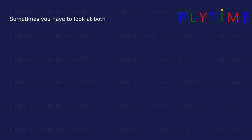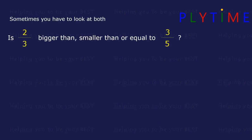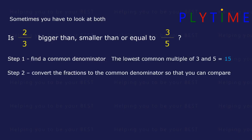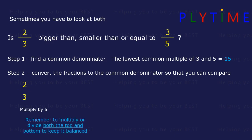Sometimes you have to look at both the top and the bottom. Is two thirds bigger than, smaller than, or equal to three fifths? We need to find a common denominator to be able to compare them. The lowest common multiple of three and five is fifteen. We need to convert the fractions to the common denominator. Fifteen divided by three is five, so we multiply the top and the bottom by five. That gives us two times five is ten and three times five is fifteen — equivalent to ten fifteenths.